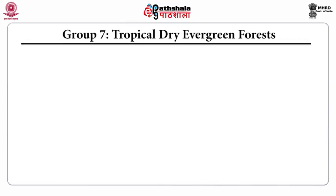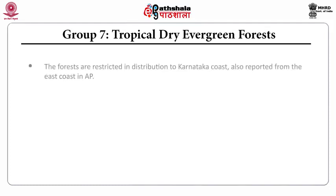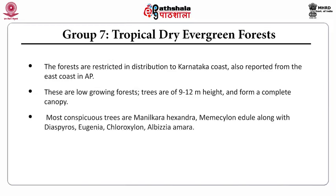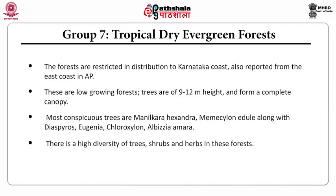Group 7 is represented by the tropical dry evergreen forests. These forests are restricted in distribution to the Karnataka coast, and also reported from the east coast in Andhra Pradesh. These are low-growing forests; trees are 9 to 12 meters in height and form a complete canopy. Most conspicuous trees in this forest are Manilkara hexandra, Memecylon edule, along with Diospyros, Eugenia, Chloroxylon, Albizia, and Amoora. There is a high diversity of trees, shrubs, and herbs in this forest.